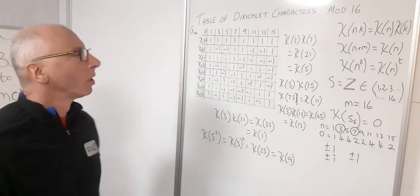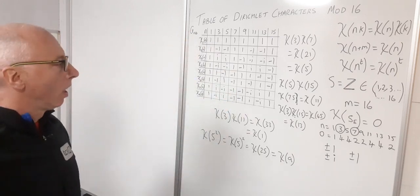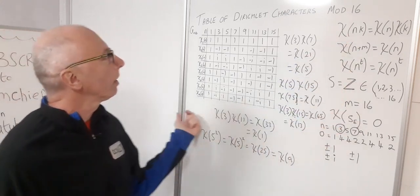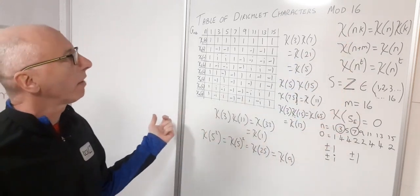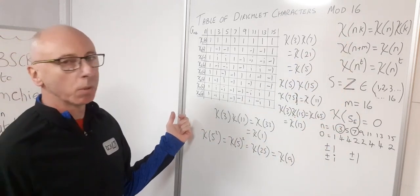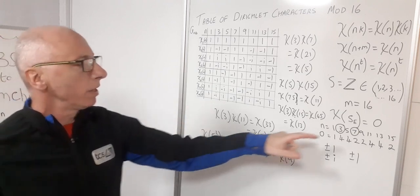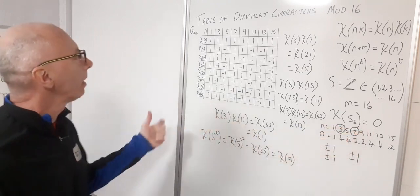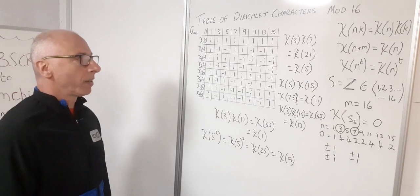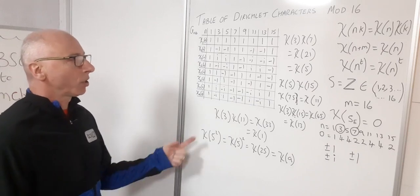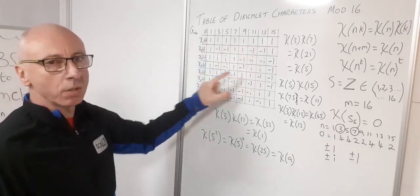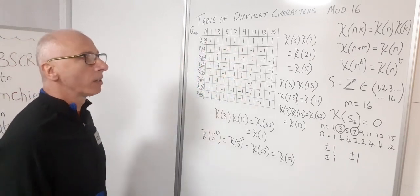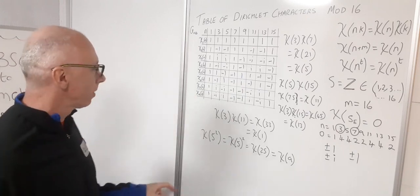That completes the Dirichlet characters table modulo 16, with the zero values for even numbers omitted from this display. In the next video I'll show you some properties and what the values in this table actually mean.